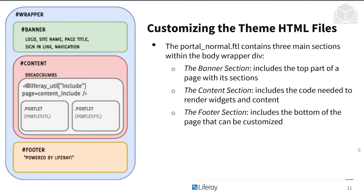We'll be customizing theme HTML files most often to change how a widget looks or the location of a default element. Portal Normal FTL contains three main sections within the body wrapper div. As shown on the left, the wrapper in blue represents the entire page body. You have the banner section at the top, which includes the logo, navigation, sign-in link, page title, and site name. Then the content section in the middle, which includes code to render widgets and content. Finally, the footer section at the bottom — by default it says 'Powered by Liferay,' but you can change that.